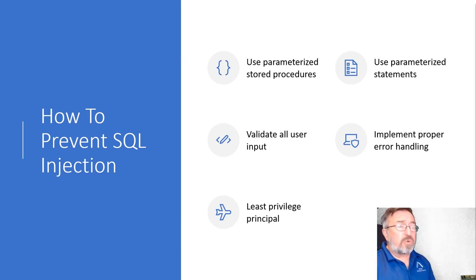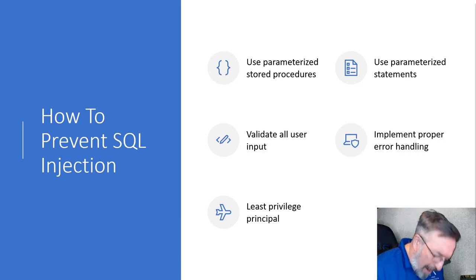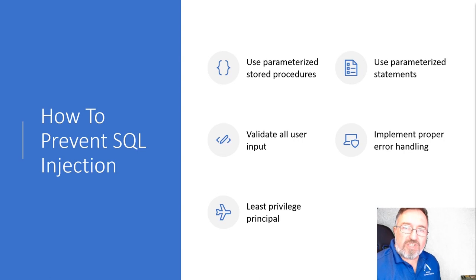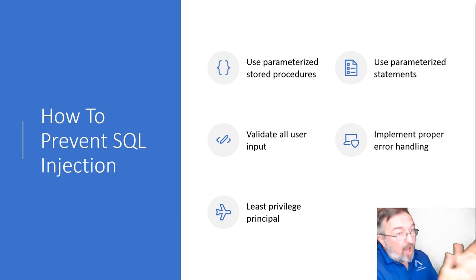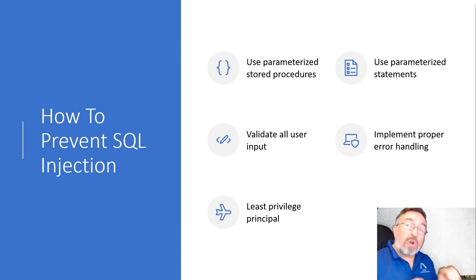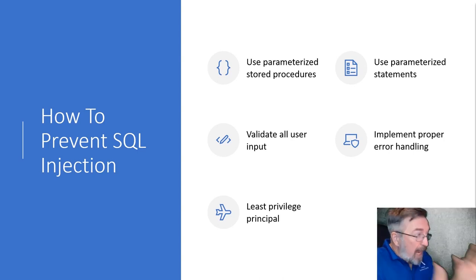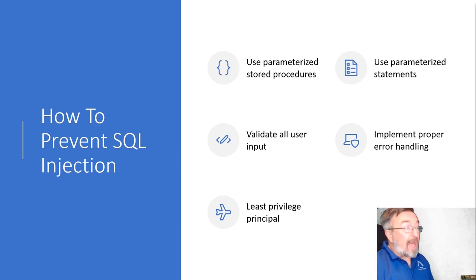Finally, and this one's huge — use the least privilege principle. There's no reason why SA privileges are required for your football pool application. There are way too many applications with security breaches because we're not following the least privilege principle. Ensure that if someone can get into one database, that's the only database they can get into. If somebody can only run one query and access one table, make sure they can only access that one table. Limit people's capabilities of getting into your system. That is one of the best ways to ensure you're covered.